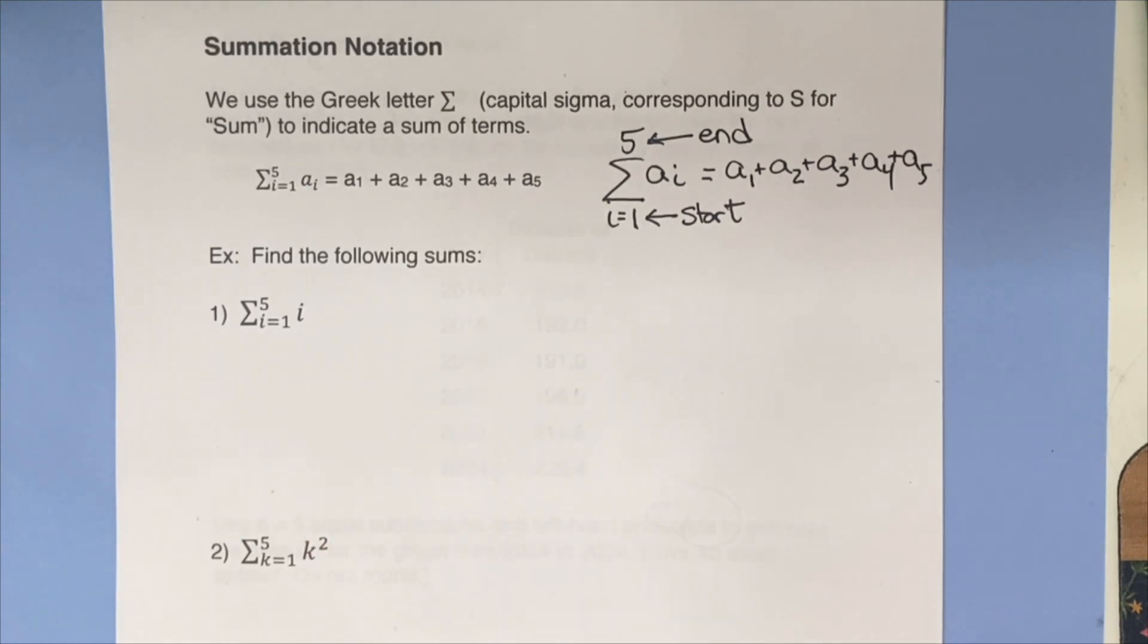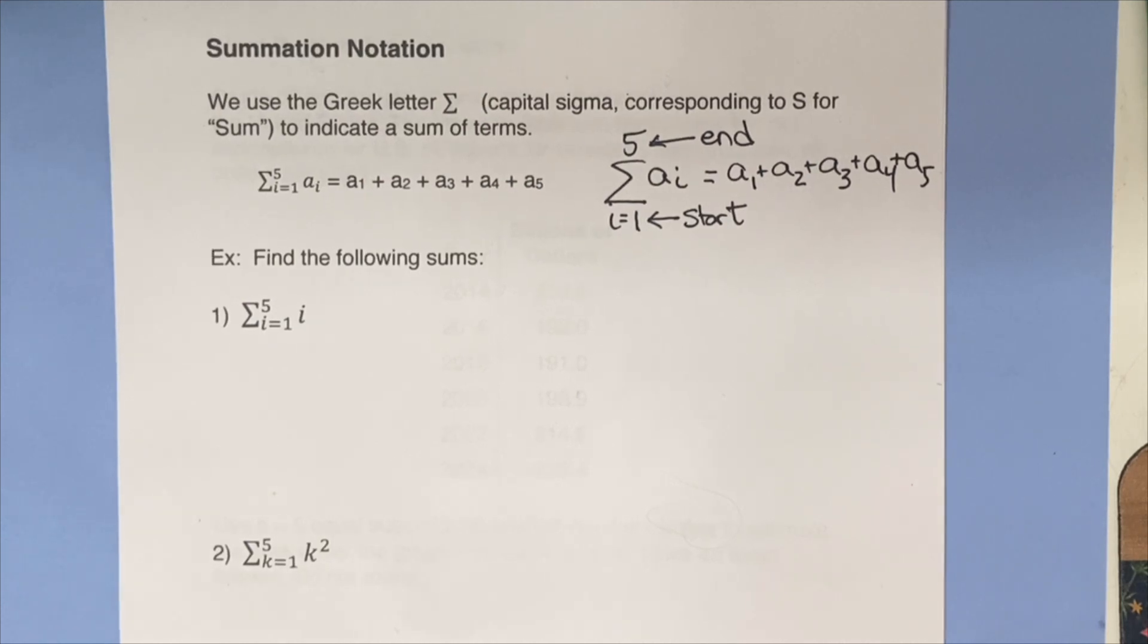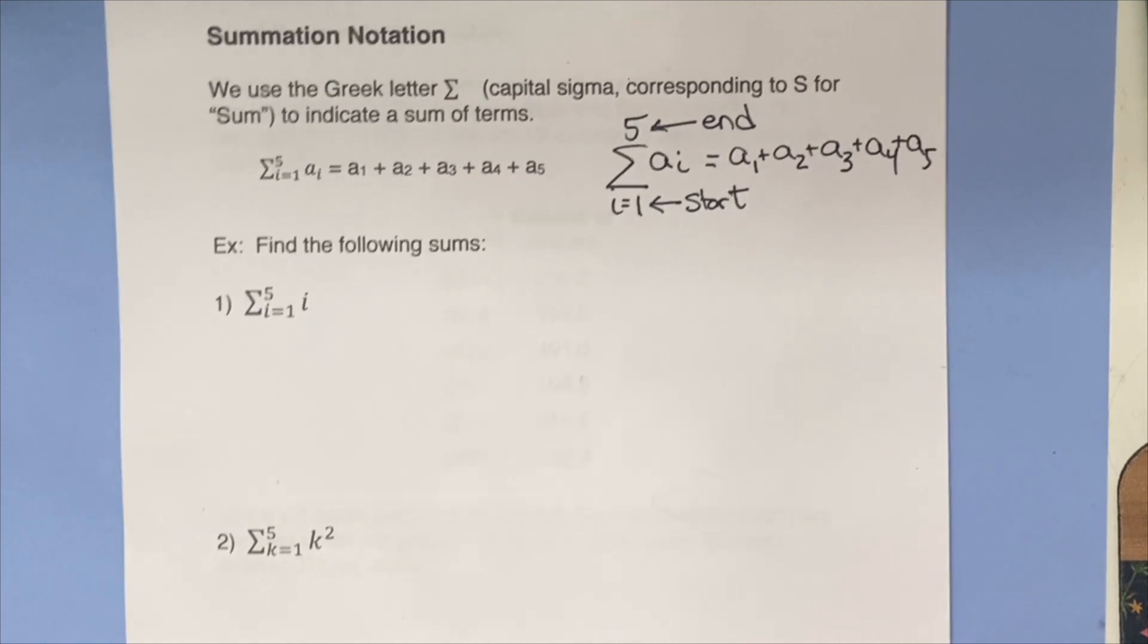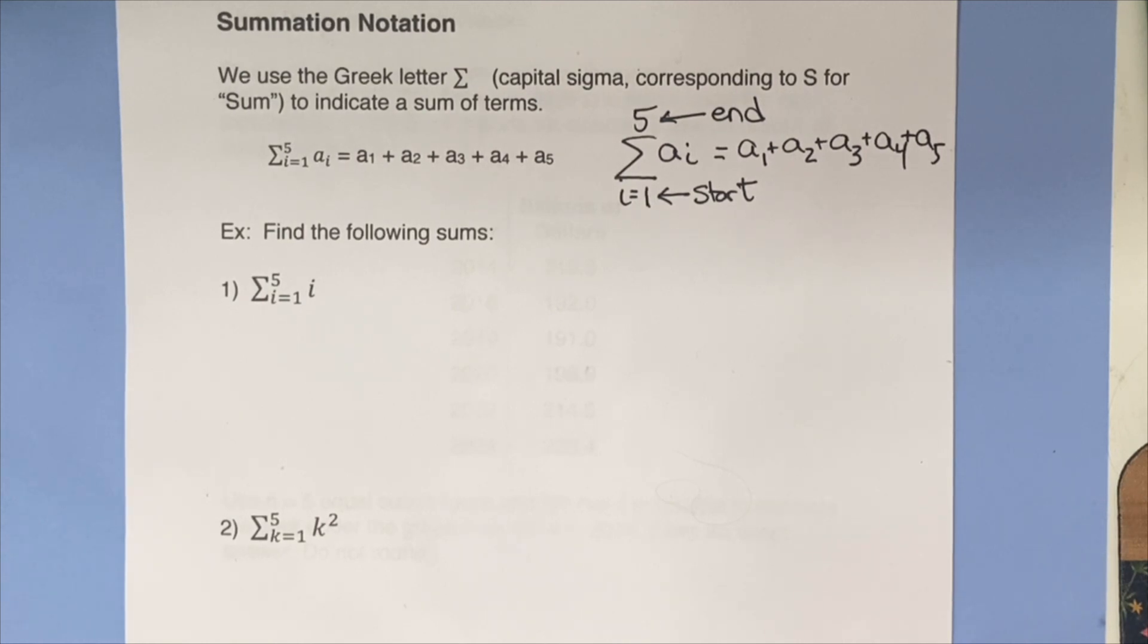So take a sum of these five things. And for what we're doing in this section, we're just going to introduce this new notation and then we will talk about it more in the next section. So let's go ahead and find the following sums.